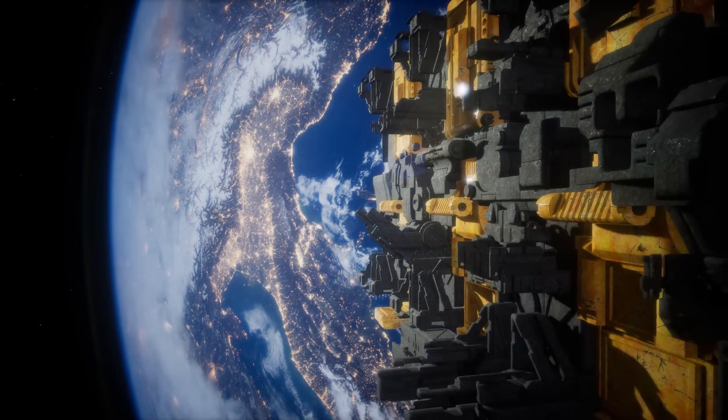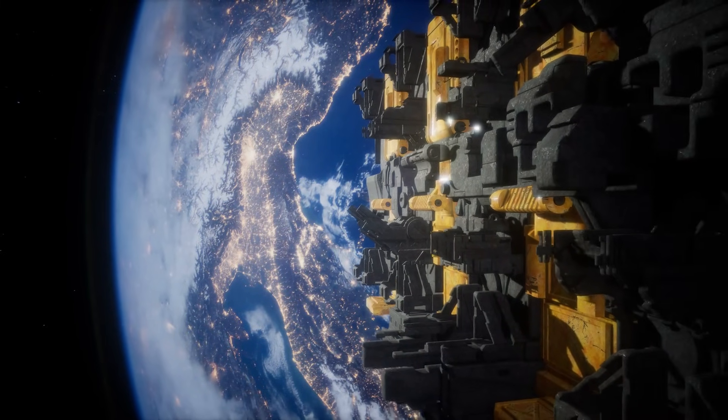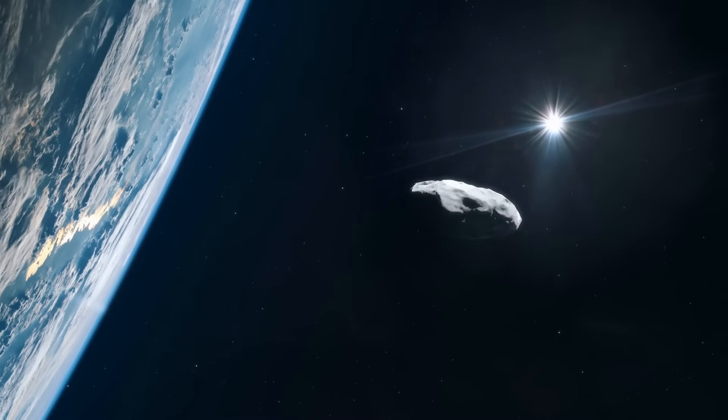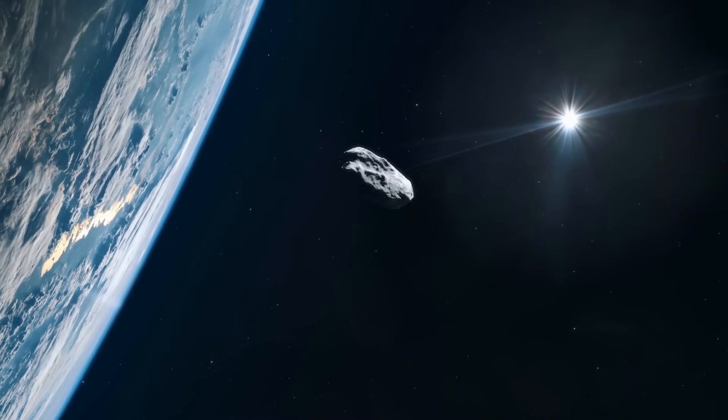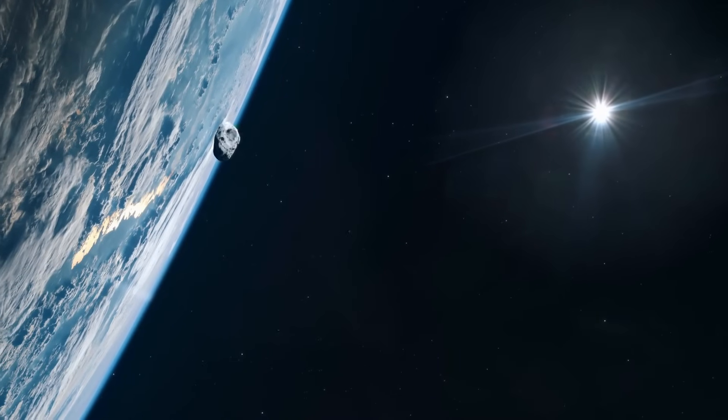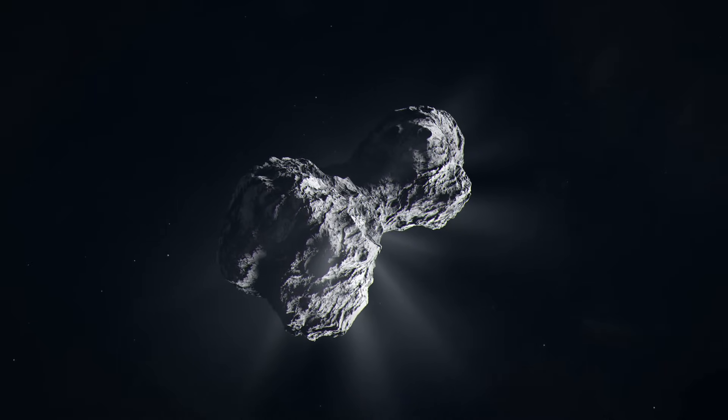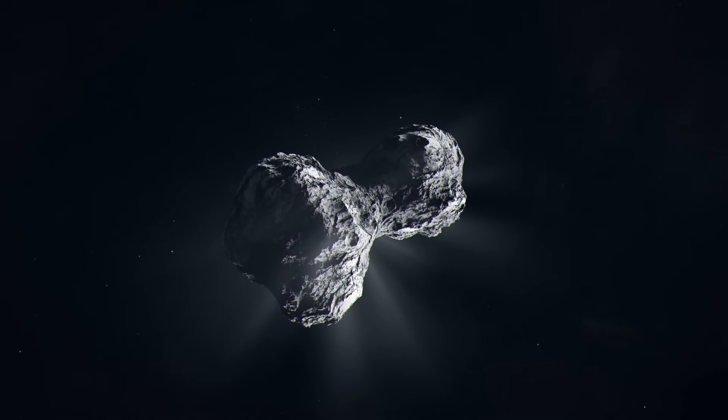Two years later, Borisov entered the solar system, and it seemed more familiar. With its dust tail and gaseous coma, it resembled an ordinary comet, albeit with subtle peculiarities in its chemistry. If Oumuamua was strange for what it lacked, Borisov was noteworthy for how typical it appeared.